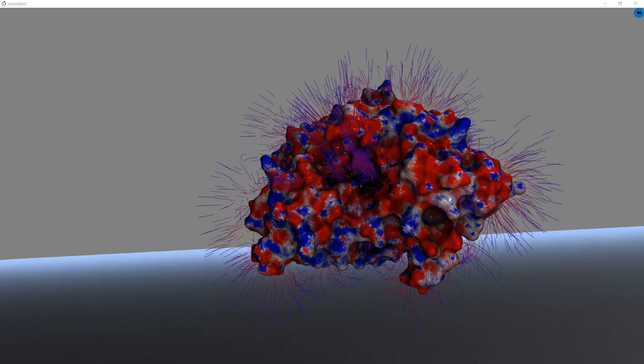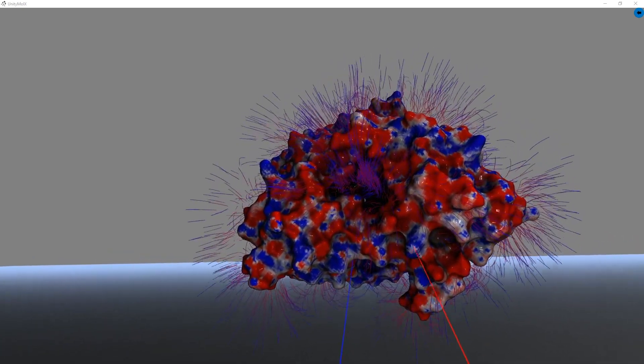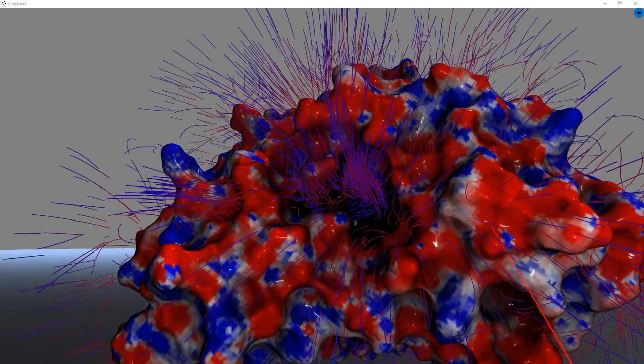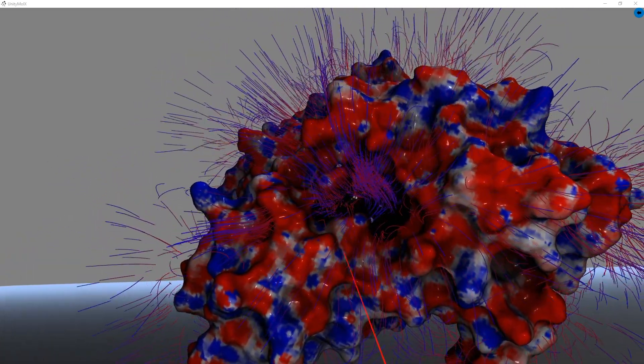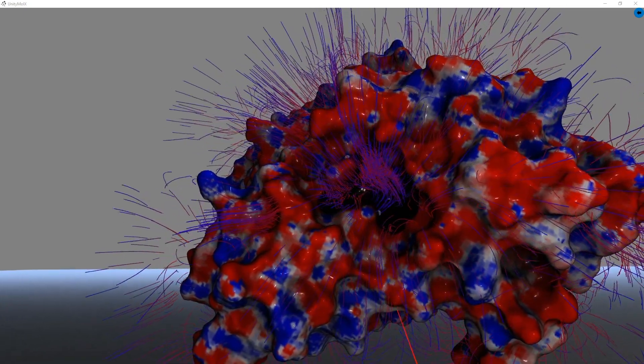Here we can see the entrance of the catalytic gorge. Let's take a second and blow the structure up. When we do that, we can see that the electrostatic gradient is pouring from the inside of the enzyme out into the solvent.